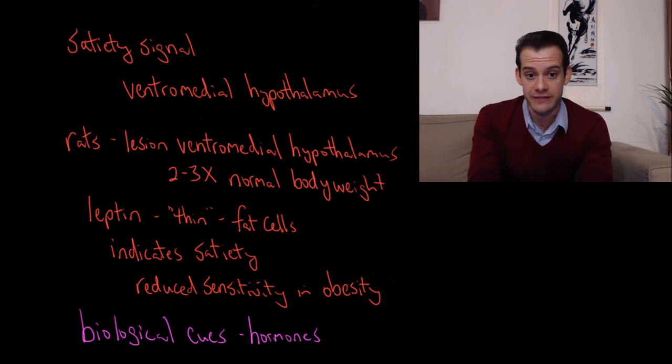So if you destroy the ventromedial hypothalamus in rats, what you find is they continue eating. They don't get the off signal. So they get hungry and then they just don't stop eating. They'll eat continuously. And so they become very, very large.